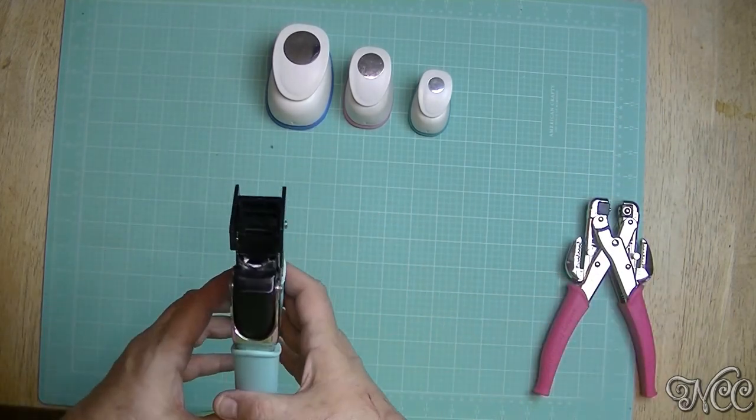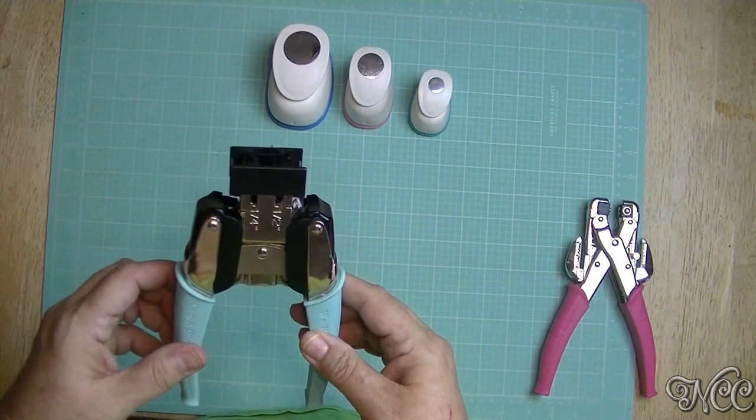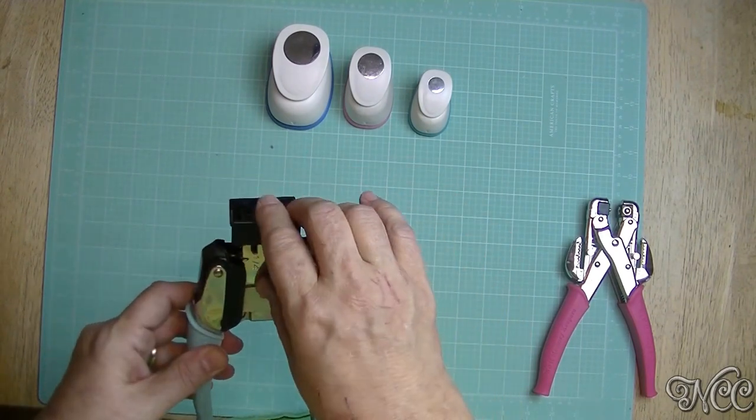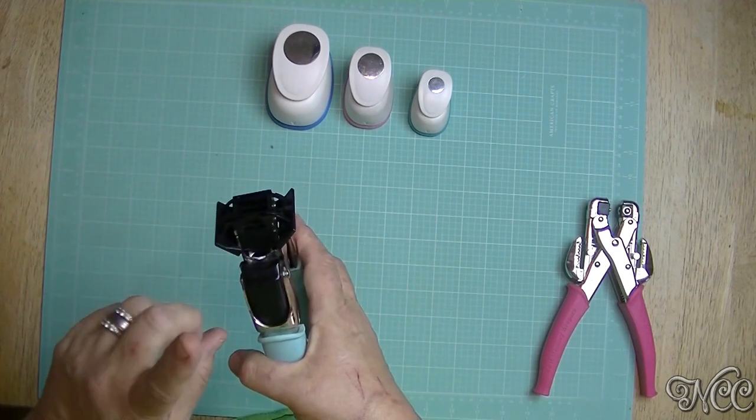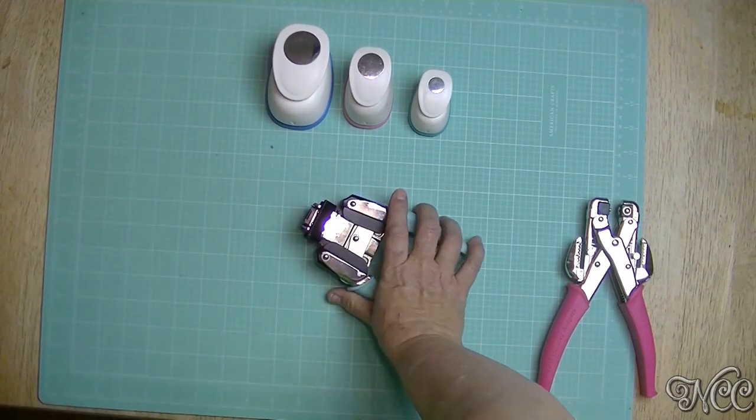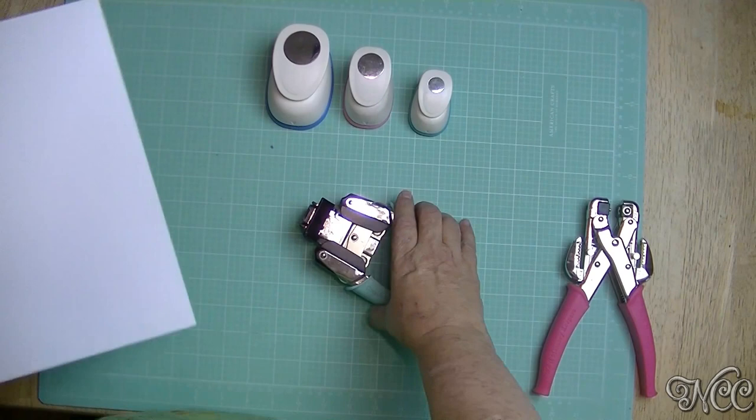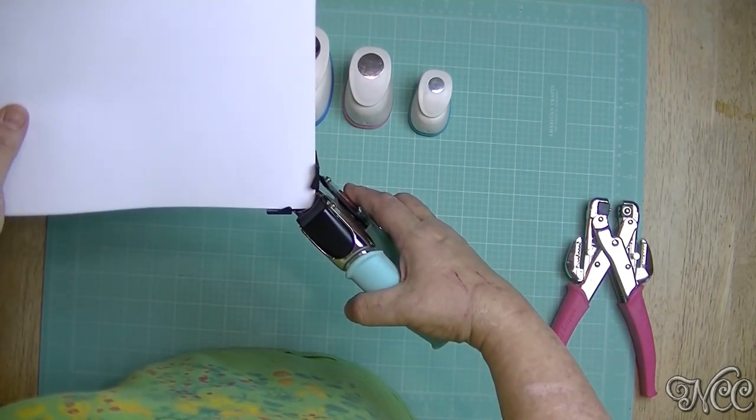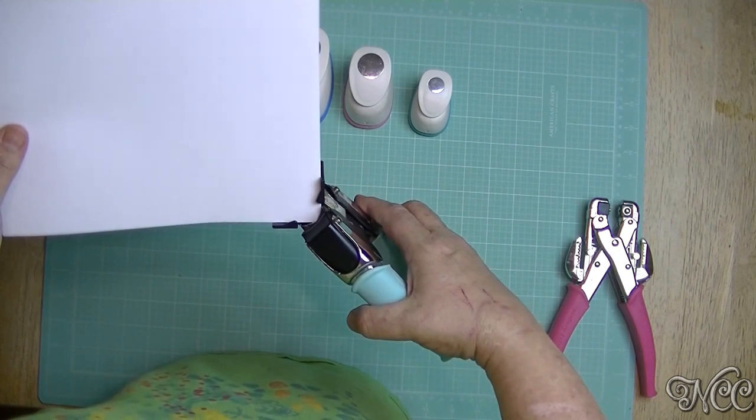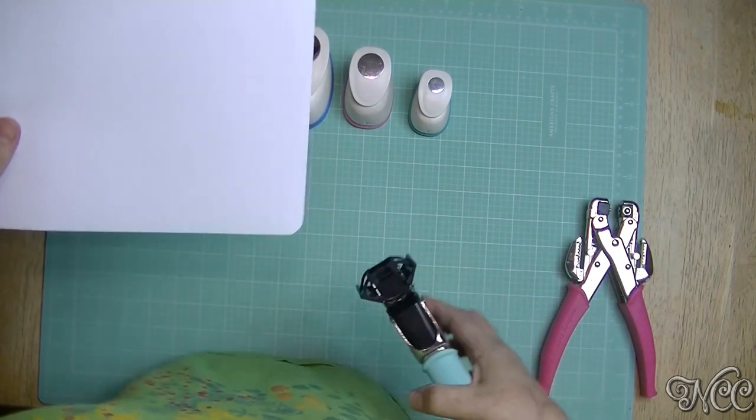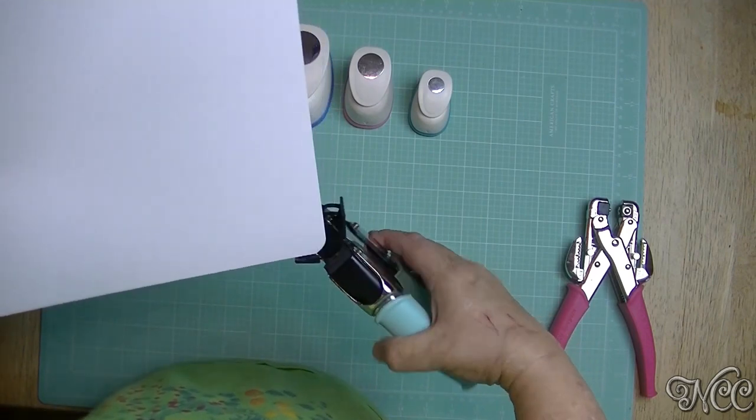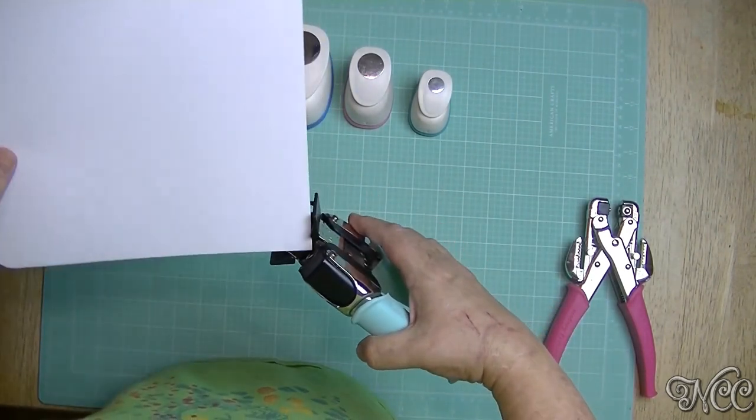This is a corner chomper, also made by We Are Memory Keepers, and it is in the crop-a-dile line. They make these in several different configurations, and I'm going to show you how this works. This one is the half and quarter inch corner rounder. What you do is you put the corner of your cardstock or paper in there, and it's just going to round it for you. They also have different patterns. I have everyone that they offer.